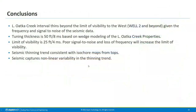The lower Oafta Creek interval thins beyond the seismic limit of visibility to the west, especially beyond well 2. The tuning thickness is about 50 feet, and we're already at that on the east side, pushing the limits. The limit of visibility is 25 feet, and anything contributing to poorer signal-to-noise or loss of frequency will increase that limit further. One thing we can be confident in is that the seismic thinning trend is consistent with the isochore trend maps and tops, and the seismic captures the non-linear variability in the thinning trend in the subsurface.